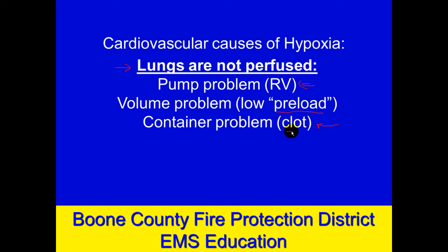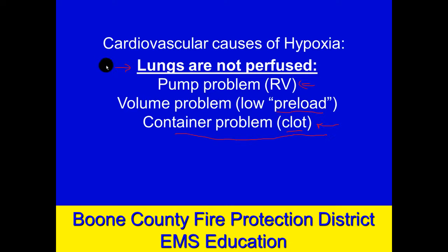A traveling thrombus or traveling clot is called an embolus. That embolus has lodged in the pulmonary arteries, causing a pulmonary embolism. This would reduce the amount of blood flowing to the lungs, making perfusion to the lungs compromised, which means blood is not available for oxygen to exchange with it. So one cause of hypoxia could be something going on in the lungs in terms of perfusion.